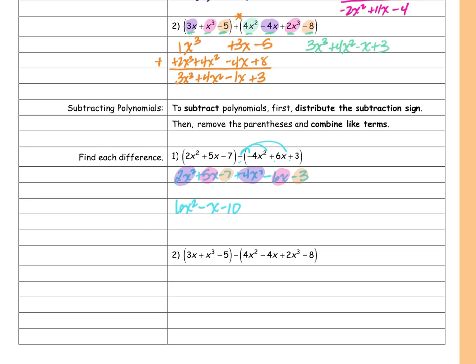I can also do this vertically. I write the first polynomial: 2x squared plus 5x minus 7. Then I distribute that subtraction sign before writing the second one, which gives me 4x squared minus 6x minus 3. Once I distribute that subtraction sign it becomes addition. Adding them together gives me 6x squared minus x minus 10.